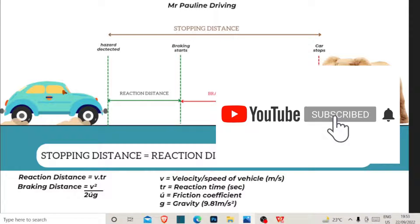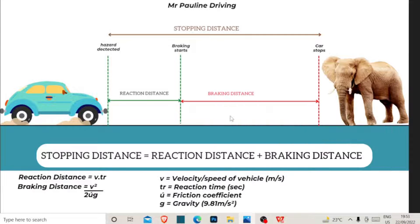Hello, welcome to this video. My name is Mr. Pauline. Today we are going to be looking at how to calculate the total stopping distance, reaction distance, and braking distance. This video is quite unusual from the rest of our videos in that we are not looking at a question paper — we are looking at how to calculate these distances. You can get a question in an exam about stopping distance at 40 kilometers per hour, and you should be able to answer it.